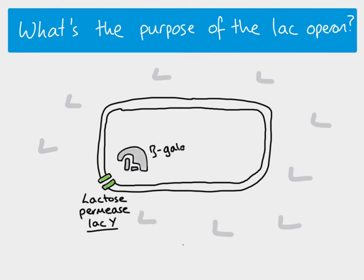The enzyme that breaks down the lactose is called beta galactosidase, also known as lactase, but here we'll call it beta galactosidase. This enzyme is coded for by a lac Z gene. Both of these genes — lac Z and lac Y — are found on what we call the lac operon.